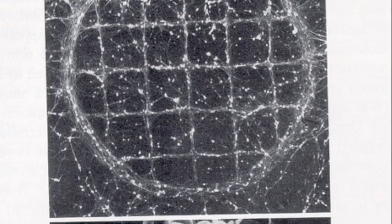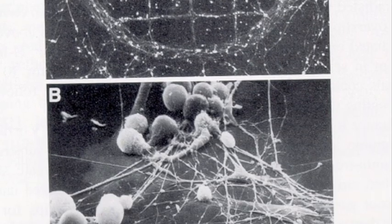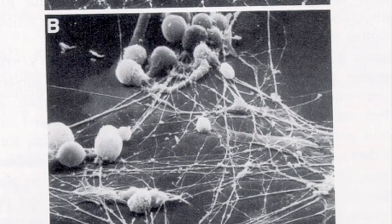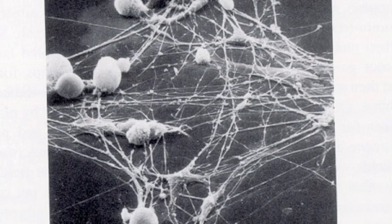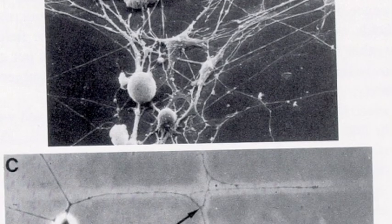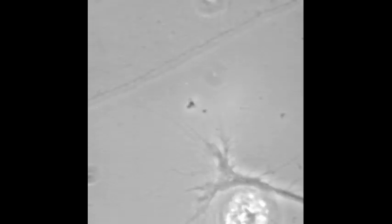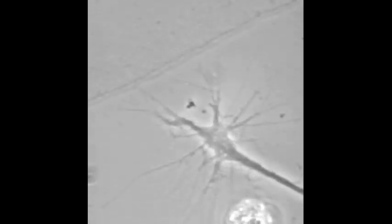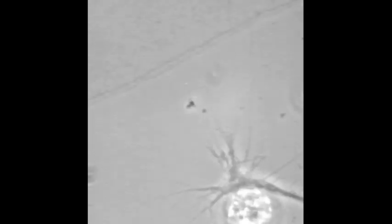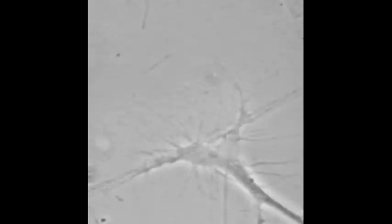The top low-mag view shows axonal growth that follows a patterned surface of the adhesive molecule laminin. The middle view shows neurons clustered on a patch of laminin, while the lower view shows axons tracking along a laminin path. In this video, filopodial antennae press forward from a growth cone to detect a laminin-coated surface. The growth cone then turns and accelerates to reach its preferred pathway.